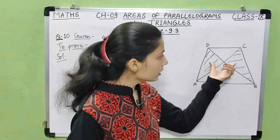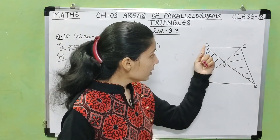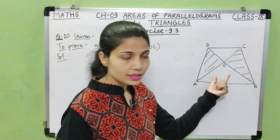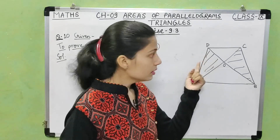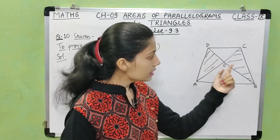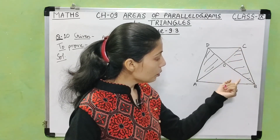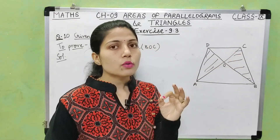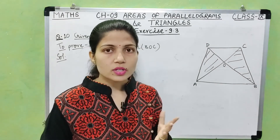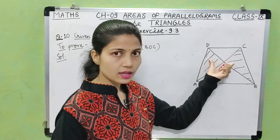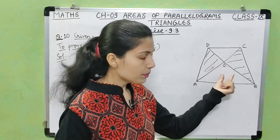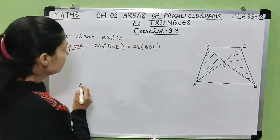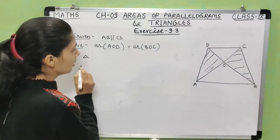Since AB is parallel to CD in trapezium ABCD, triangles DAB and CAB are on the same base AB and between the same parallels AB and CD. So their areas are equal. Now subtract the common triangle OAB from both — the remaining areas will also be equal.